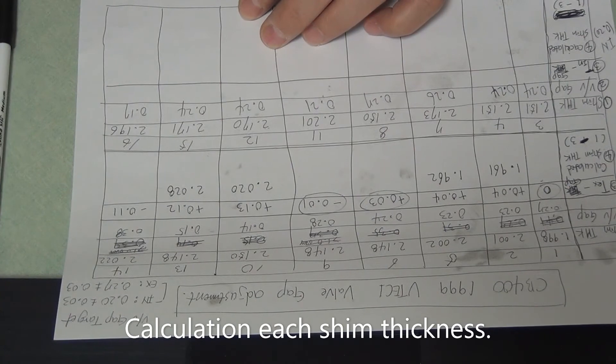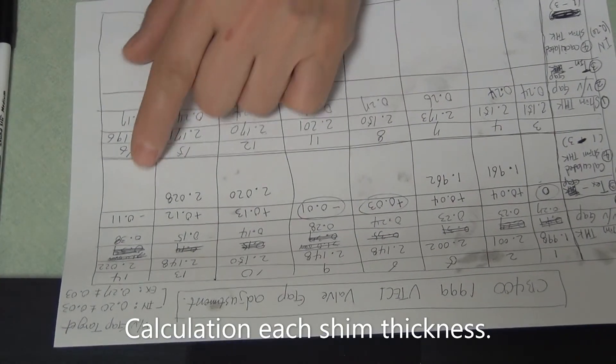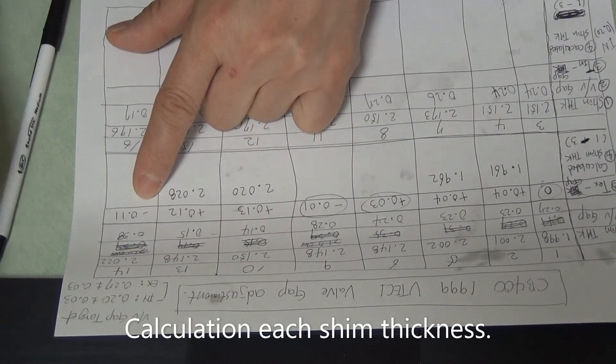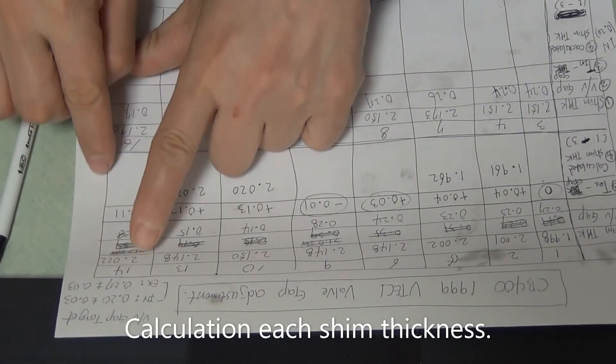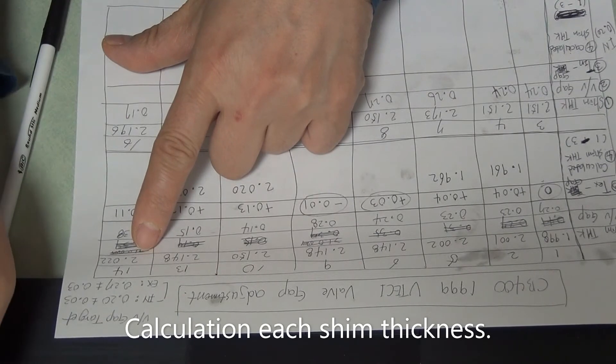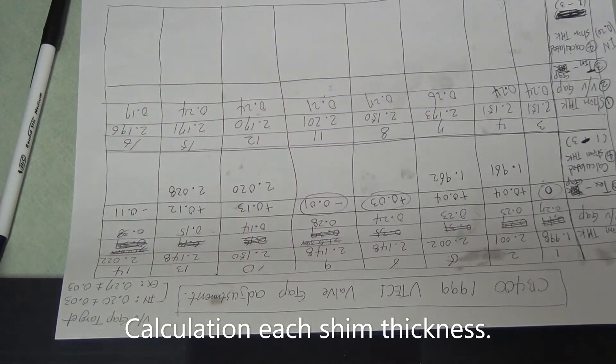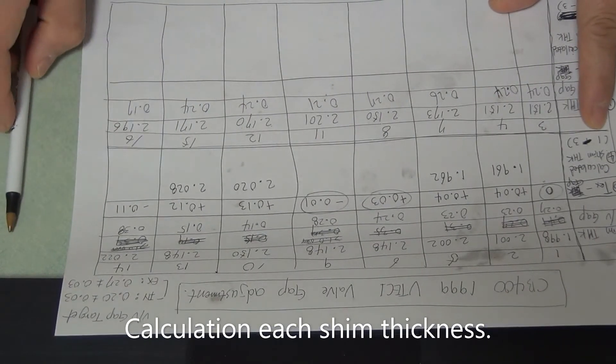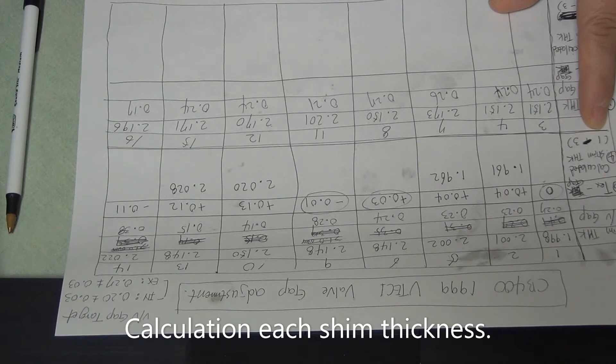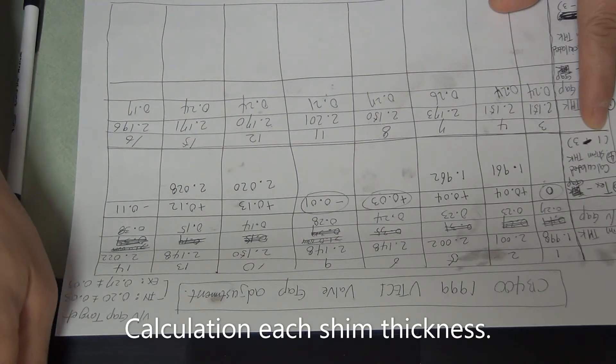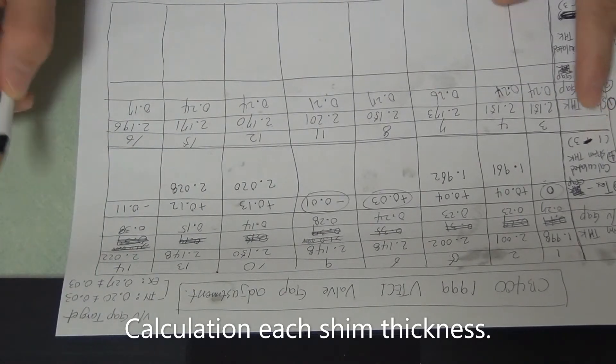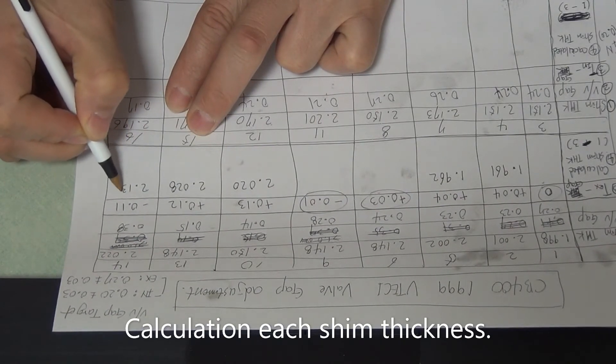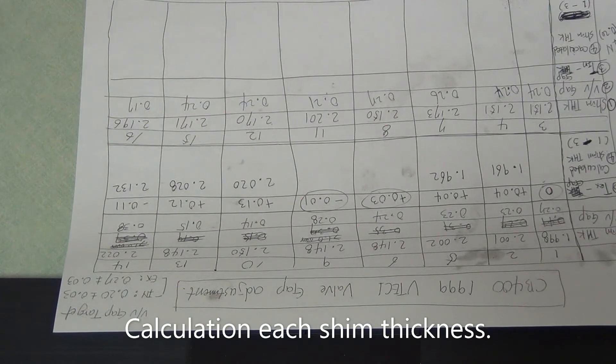It's the valve gap, the value is minus. So 2, valve shim thickness is 2.022, minus and minus, so plus. Plus 0.11, we need 2.132 shim.